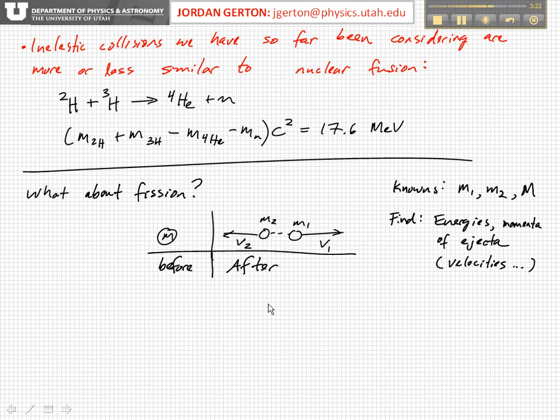So how would we approach this problem? We do it like we did the other one. First, let's imagine we know m1, m2, and m—the masses. What we're looking for is the energies and momenta of the ejecta, the two particles after the decay, and therefore their velocities.